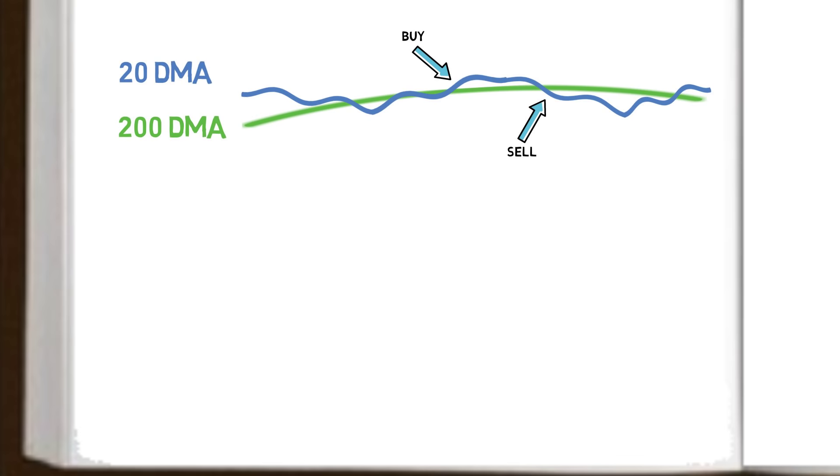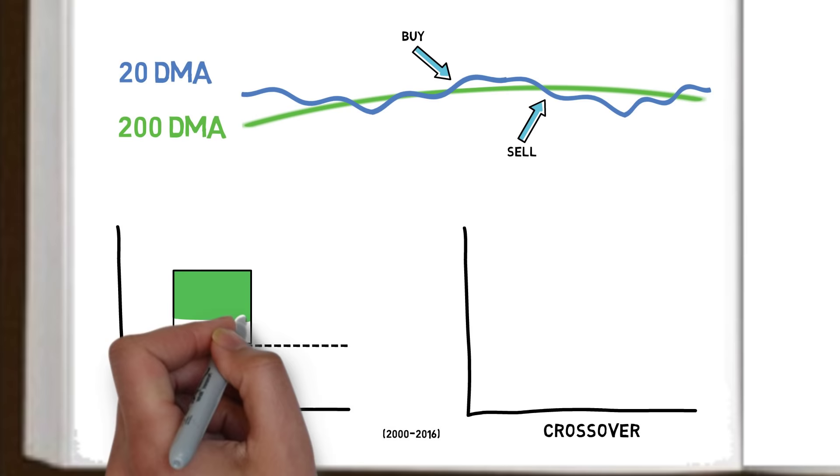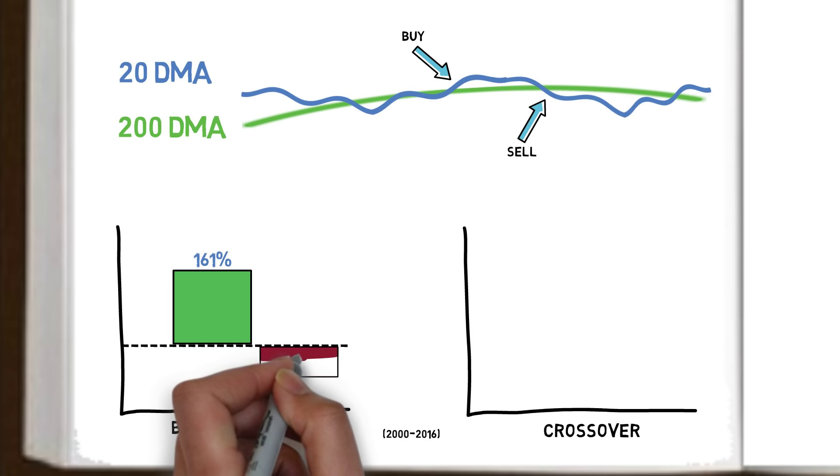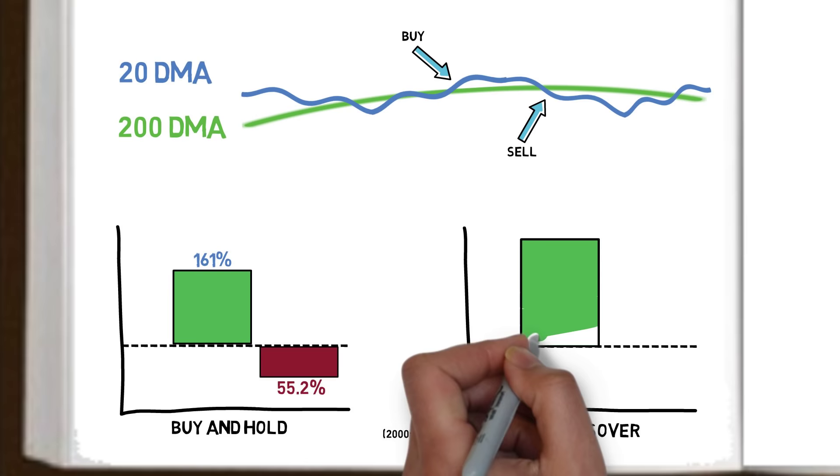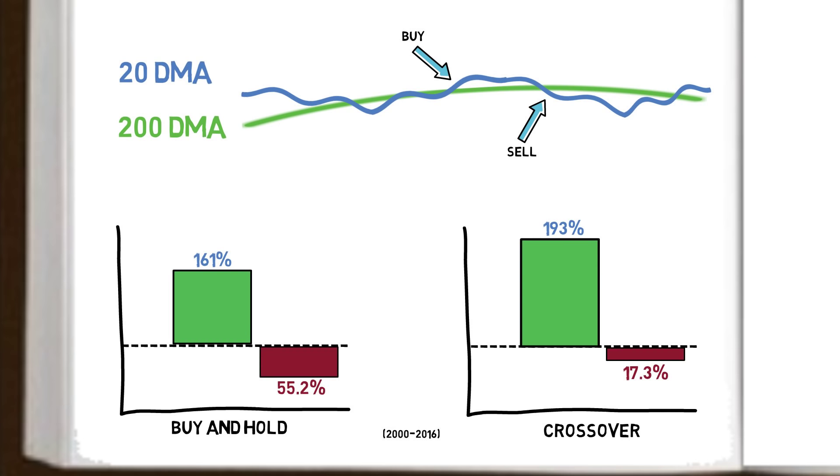Once again, let us compare buy and hold over the same time frame against this crossover signal. Since the first crossover signal was generated, buy and hold provided a return of 161%, with a maximum drawdown of 55.2%. The simple crossover strategy provided a return of 193%, with a maximum drawdown of 17.3%. Again, considerably less risk than a buy and hold strategy alone.